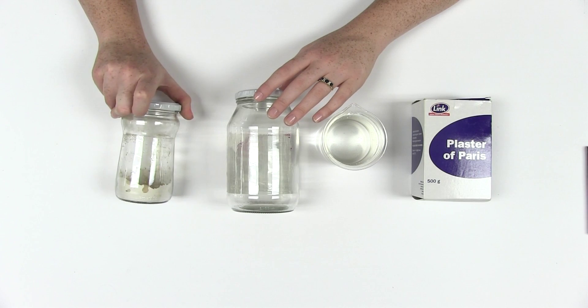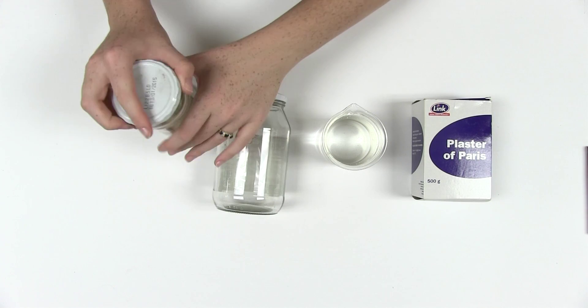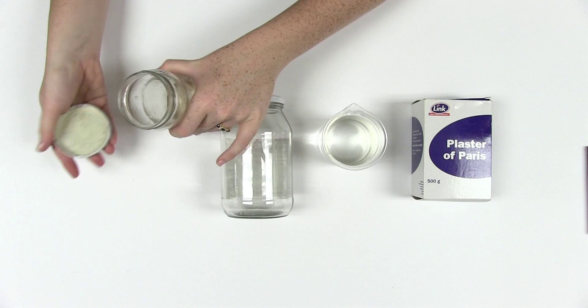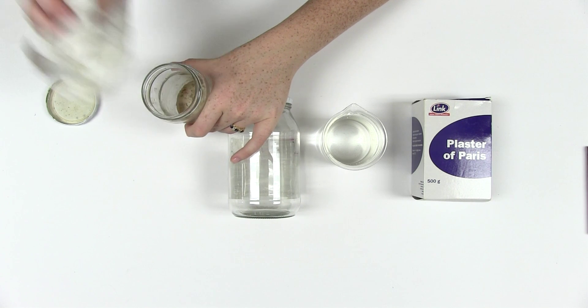To make a killing jar, mix plaster of Paris and water in the bottom of a glass jar. Leave it until it is dry, which might be about a day.